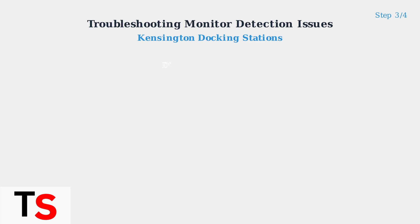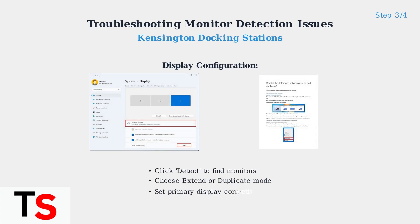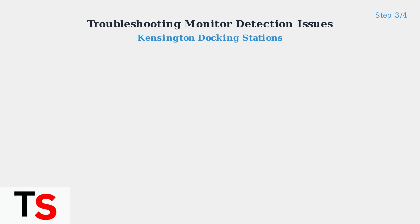Step 3: Configure display settings. Open your computer's display settings and use the detect option to force recognition of connected monitors. Choose extend or duplicate mode as needed.